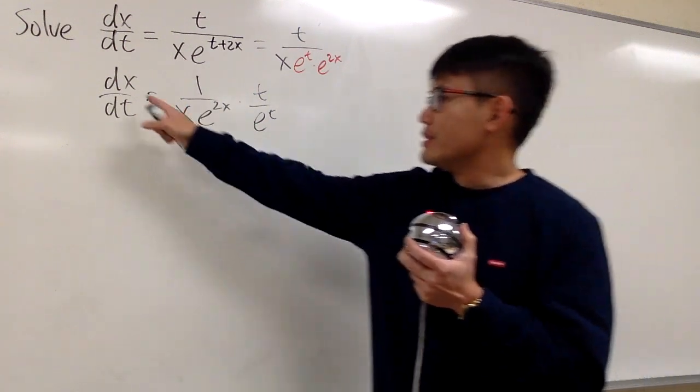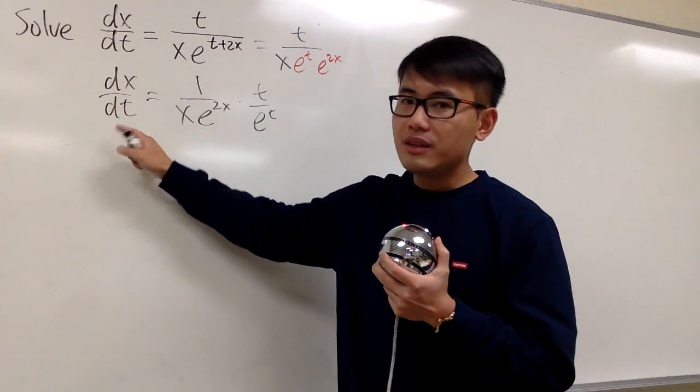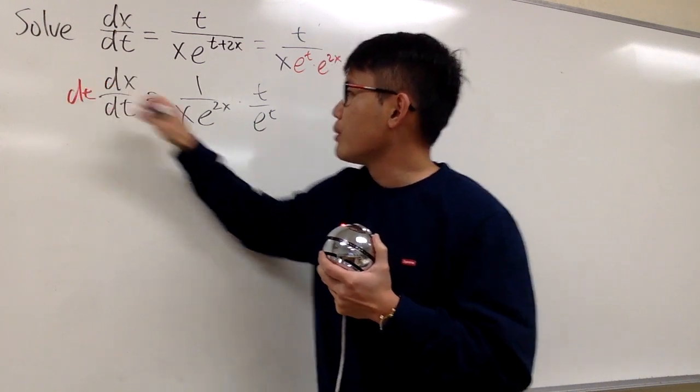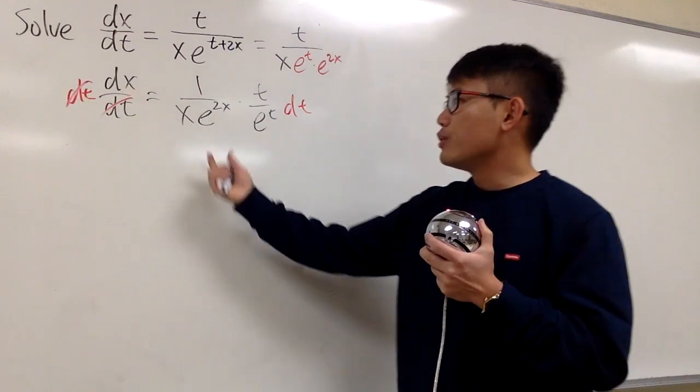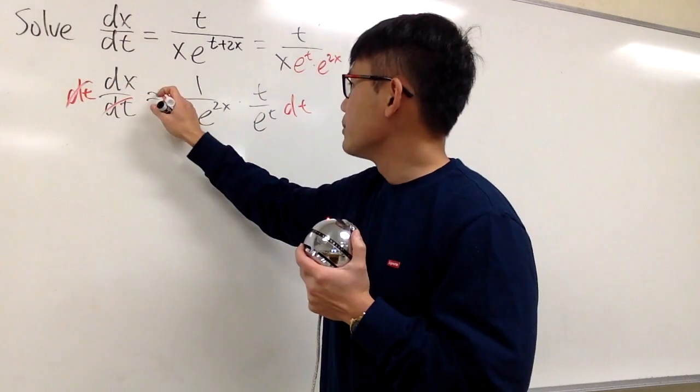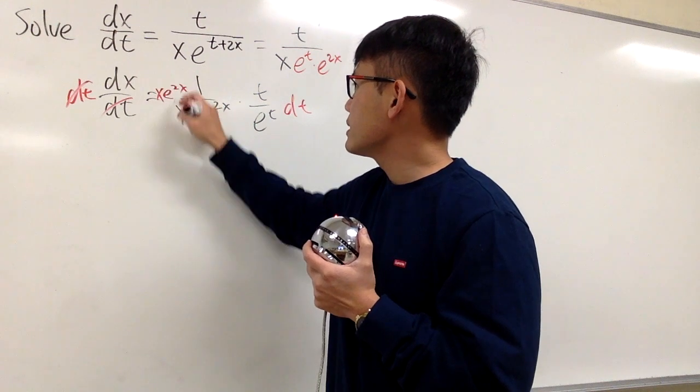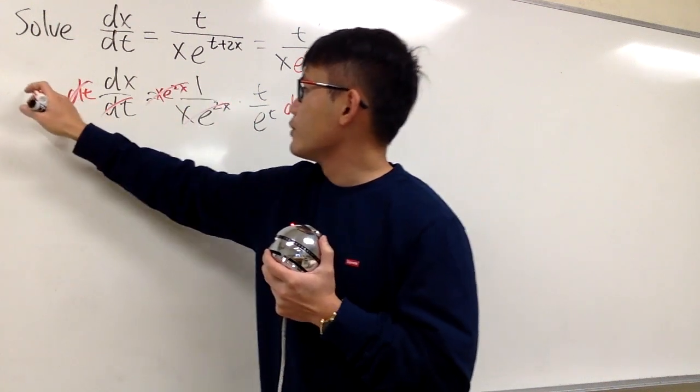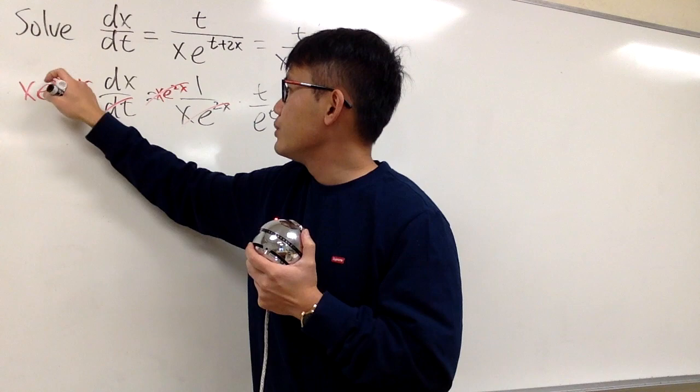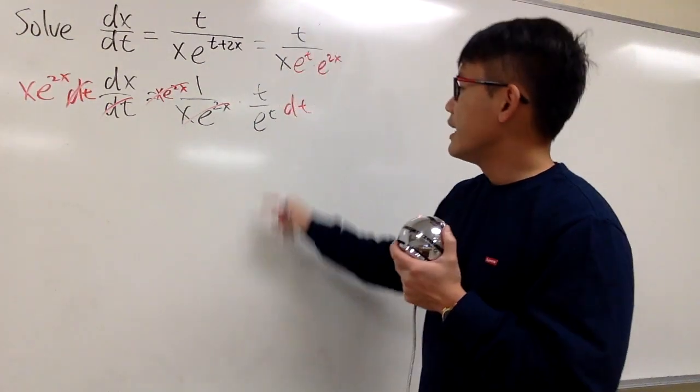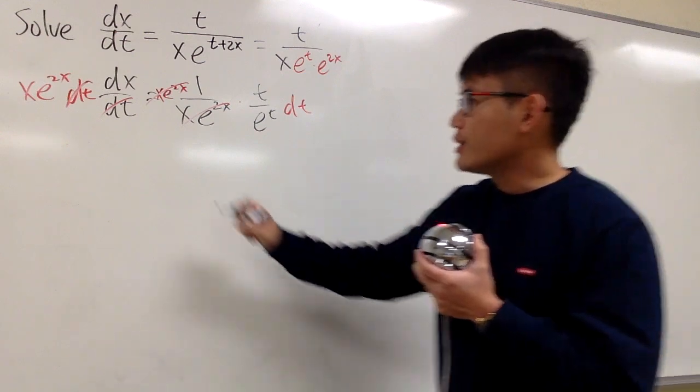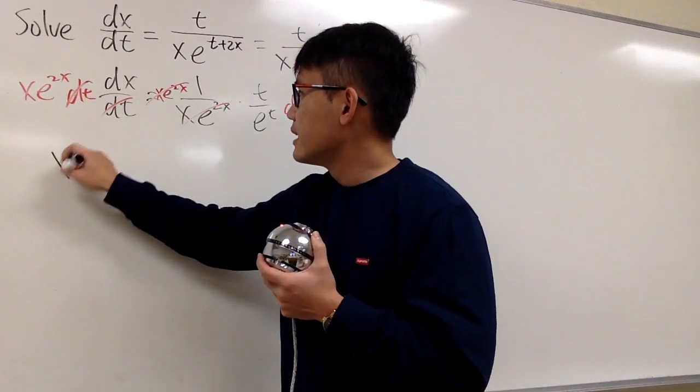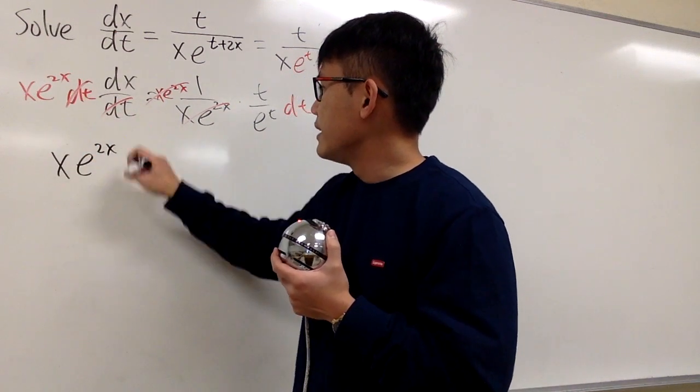And now, here we have dx over dt. Let's multiply dt on both sides so that they cancel. And I want to bring all the x together to the other side. So let's multiply x, e to the 2x, so they cancel. I'll have to do it right here as well: x, e to the 2x. And this is good because all the t's are together. So all together, we will have x e to the 2x, and this is dx.